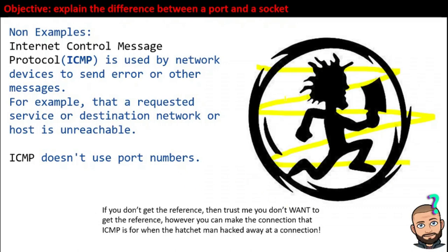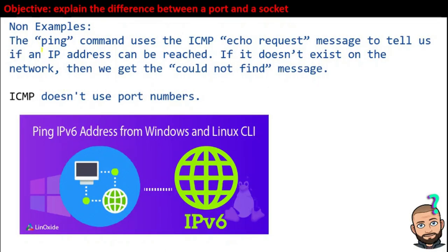If you're a visual learner, you're looking at this hatchet man and thinking that the ICMP messages are all about knowing when your network has been hacked away — like there's no connection. There are many types of ICMP messages. Ping is probably one of the most famous commands. It uses the ICMP echo request message and the echo reply message to tell us if an IP address can be reached. If it doesn't exist on the network, we get the could-not-find message.